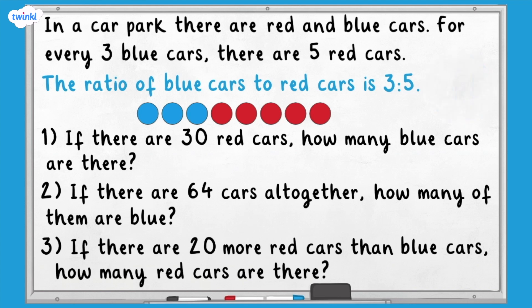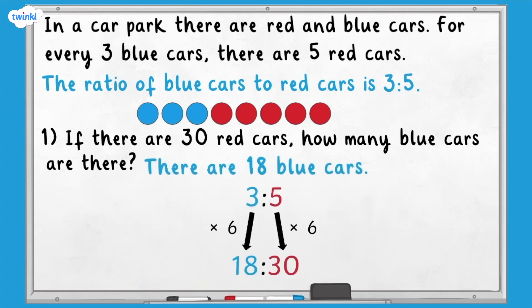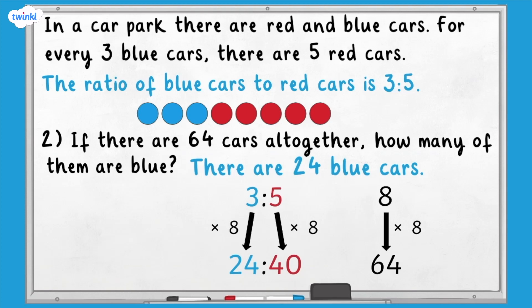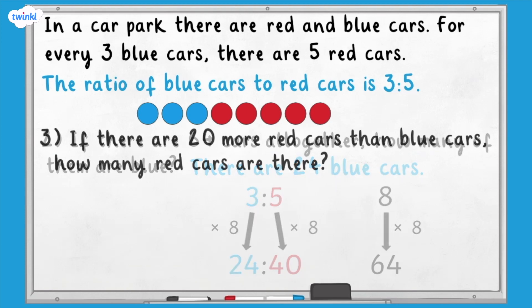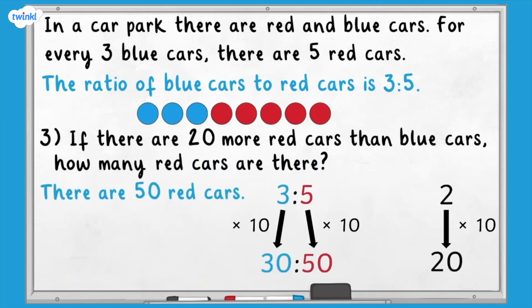Here are the answers. Question one: if there are 30 red cars, there are 18 blue cars. Question two: if there are 64 cars all together, 24 of them are blue. Question three: if there are 20 more red cars than blue cars, there are 50 red cars.